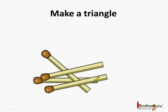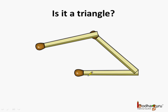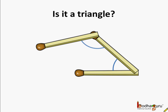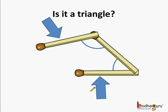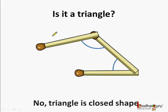Now let us try to make a triangle using matchsticks. We used three sticks and made this shape. Is it a triangle? Let us see. So one angle and two angles — where is the third angle? We cannot get the third angle unless these two sides meet at a point to make the third angle. So this open figure is not a triangle because a triangle is a closed shape.